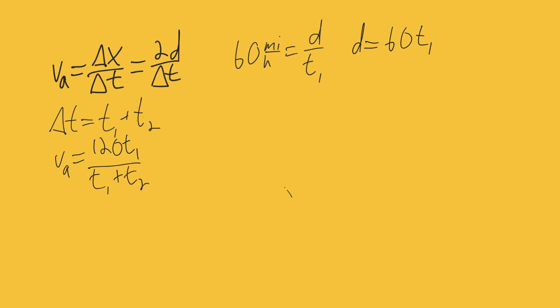And we were also told that the actual average velocity of the whole thing was 30. So we're going to stop here for a moment and we're going to reassess. We know that 60 miles per hour is d over t1. But what we want to solve in the end is the second average velocity.